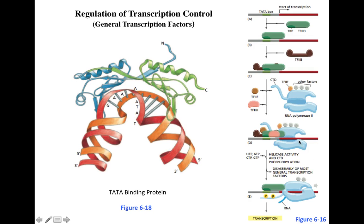The second unique function of TF2H is kinase activity — it can phosphorylate other proteins. RNA polymerase 2 has a tail known as the C-terminal domain (CTD), composed of roughly 52 tandem repeats of seven amino acids. TF2H phosphorylates this CTD tail, specifically serine 5 on every repeat unit, leading to conformational changes in RNA polymerase 2.